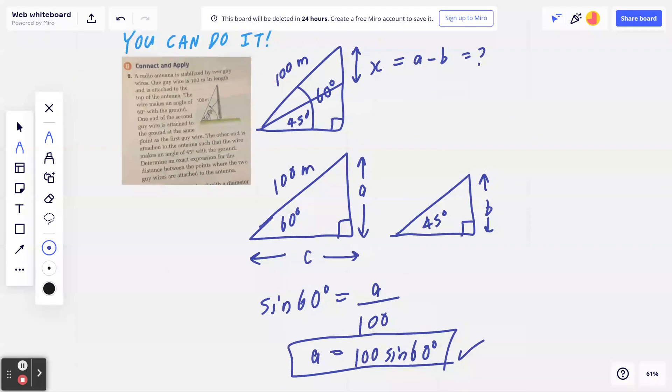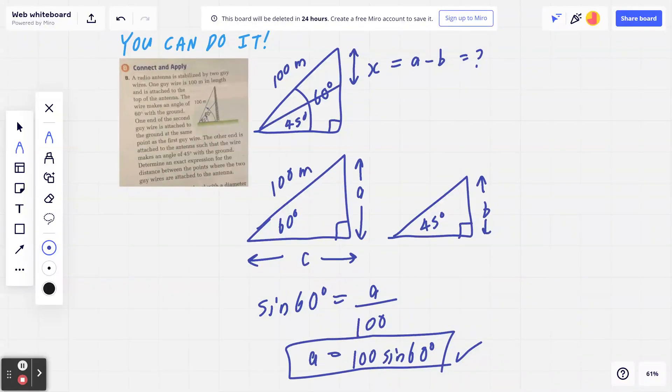And if I think about c, you can think about adjacent over hypotenuse. So cosine of 60 degrees is going to be c divided by 100. c is exactly 100 cosine 60 degrees. Let's put a box around this.